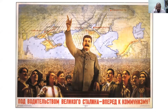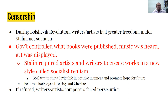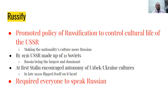Here's some propaganda — I have no idea what that says, you can look it up. So censorship: during the Bolshevik Revolution, writers and artists had a greater sense of freedom, but under Stalin, not so much. The government controlled what books were published, what music was heard, and what art would be displayed. Stalin required artists and writers to create works in a new style called socialist realism. The goal was to show Soviet life in a positive manner and promote hope for the future. If they refused, writers, artists, and composers would face persecution — go to the gulag.